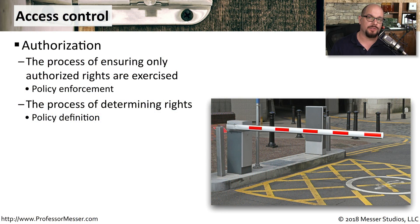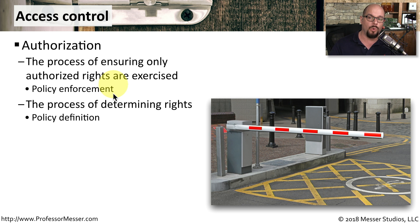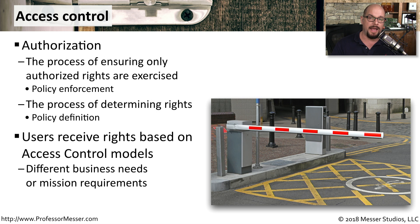The access that a user has to a particular resource starts with authorization. This is the process of ensuring that only authorized rights are exercised by a user — that's the policy enforcement. There also needs to be some method of determining what those rights are — that's the policy definition. In most environments, there needs to be some type of rights that a user will obtain using an access control model, and different organizations have different access control models depending on their overall goals.